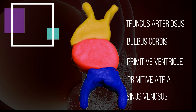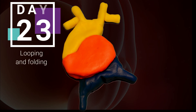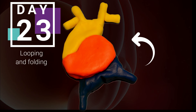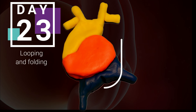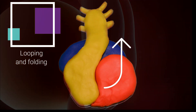At day 23, the tube begins to change shape, looping and folding. The bulbous cordis now moves more anterior, inferior, and to the right of the embryo. The primitive ventricle goes to the left side of the embryo. The sinus venosus moves superiorly and posteriorly, as does the primitive atrium. This leaves the sinus venosus more posterior to the primitive atrium.